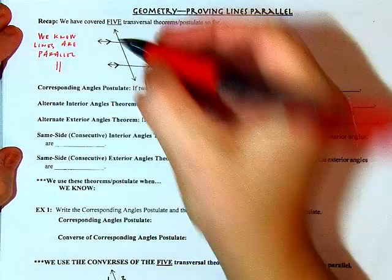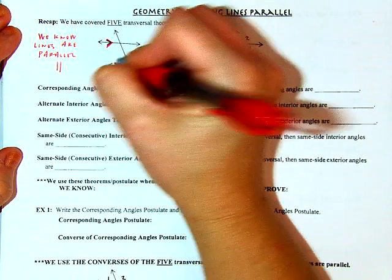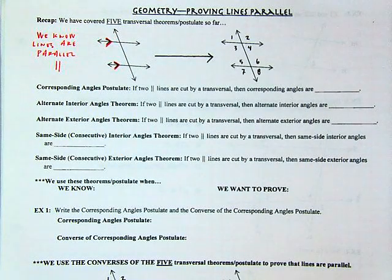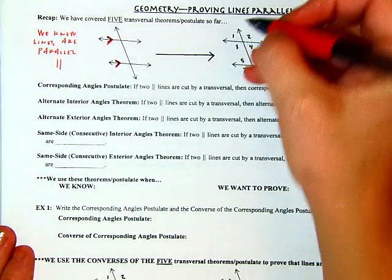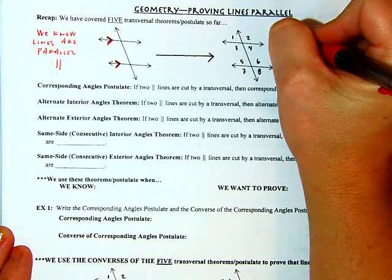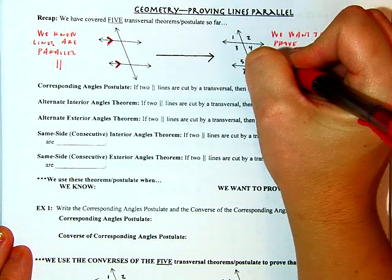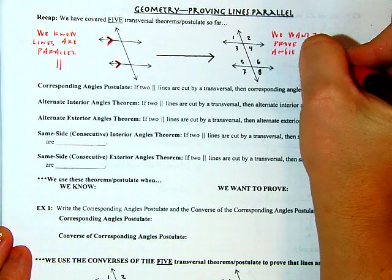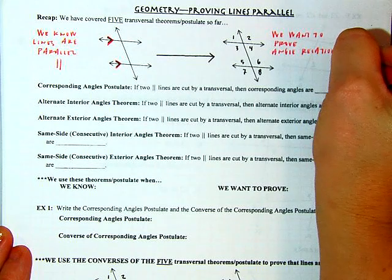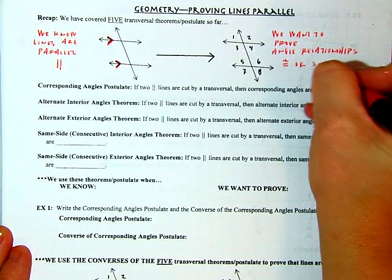The arrow notation tells us parallel. So if our lines are parallel, that leads us to certain angle relationships. It enables us to prove that our angles are either congruent or supplementary — one of the two.